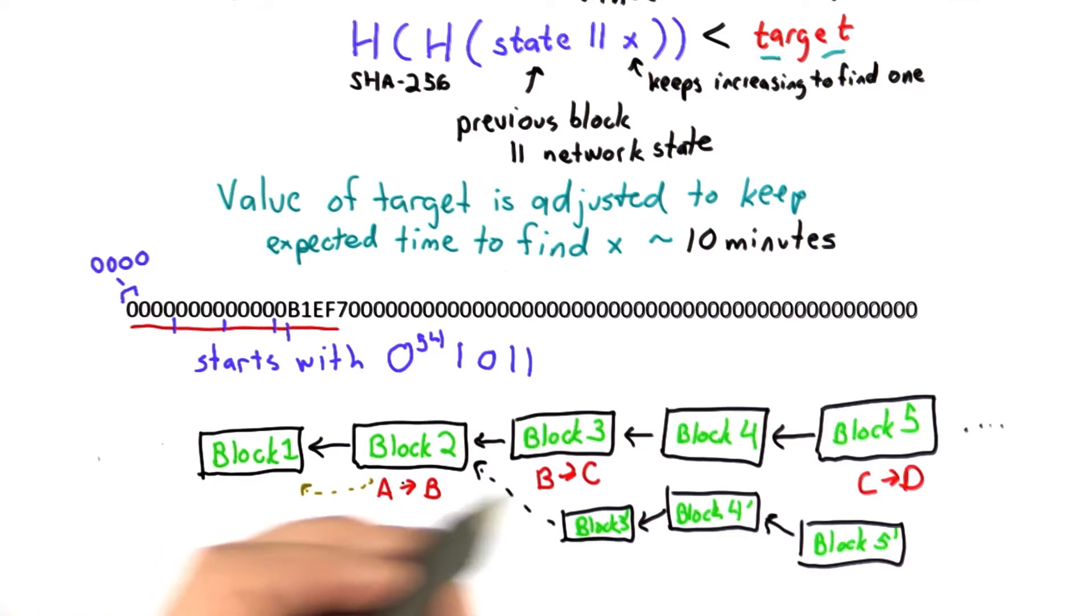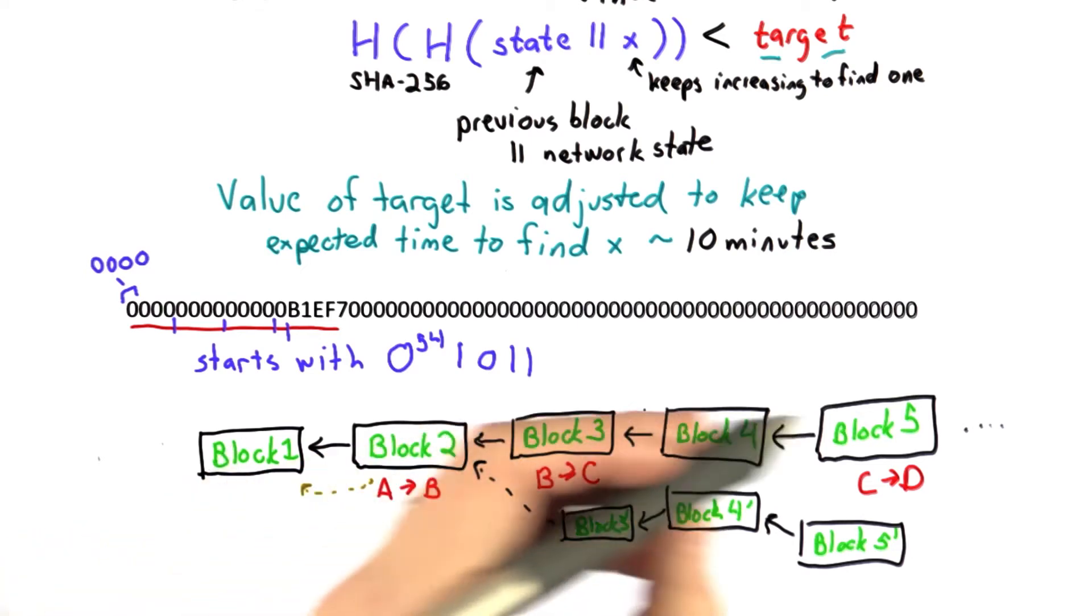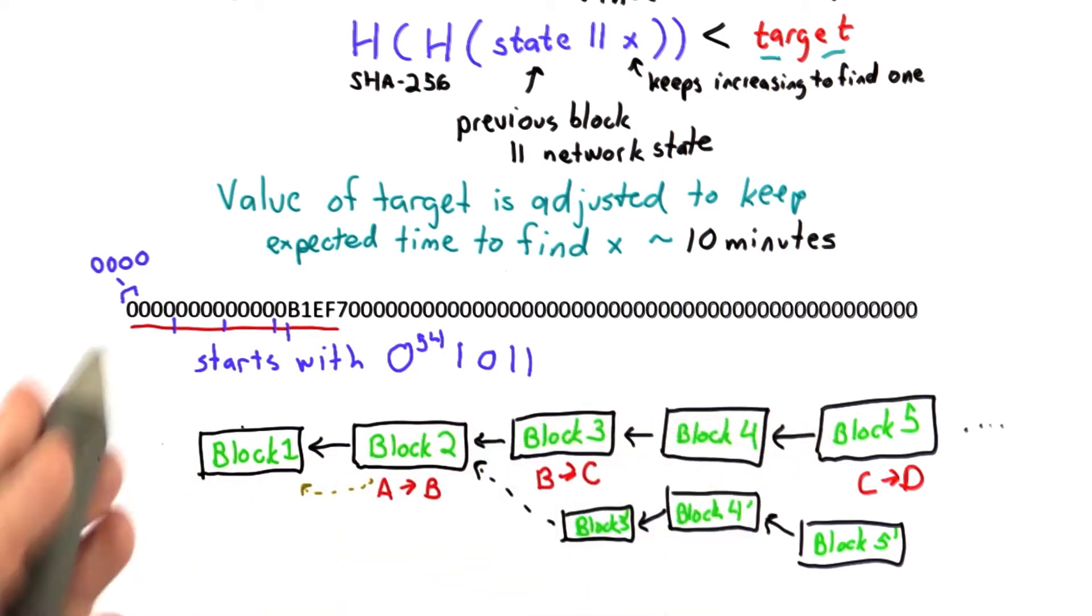This is using the transfer chain. But to prevent double spending, there's also a check of this chain of blocks. And the check is the longest chain is the one that's viewed as correct.